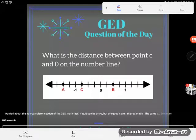It's GED question of the day time and I am working on getting caught up. I am so behind, I'm sorry if you've been waiting a while for this one. But let's take a look. It says what is the distance between point C and zero on the number line?